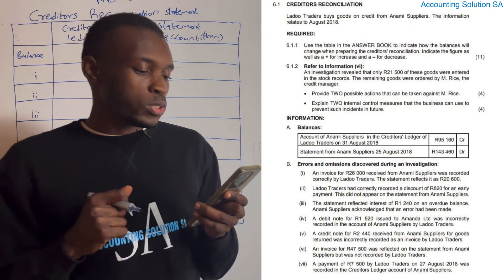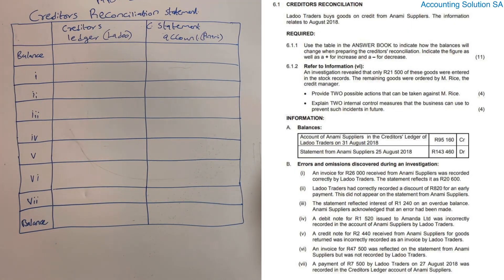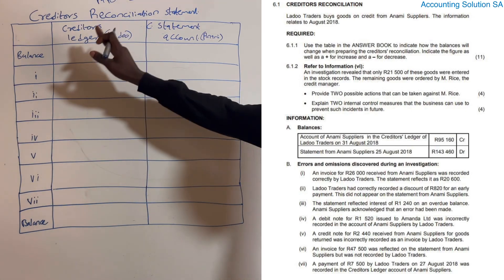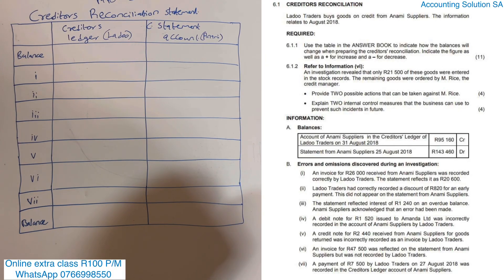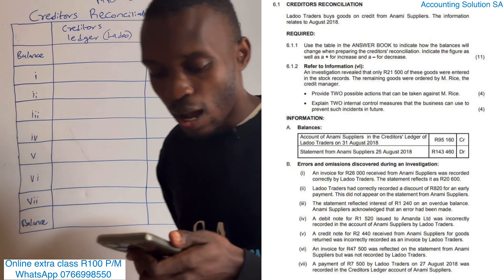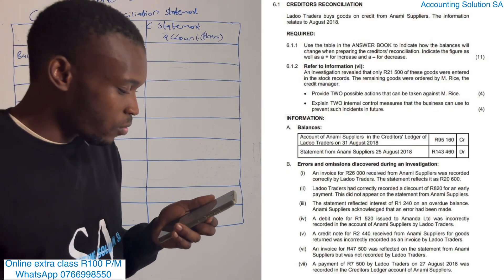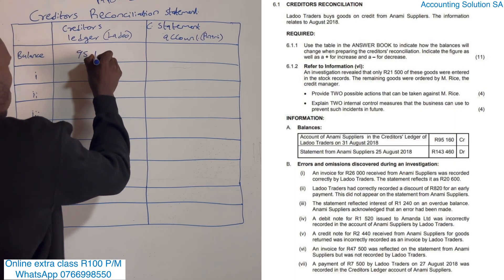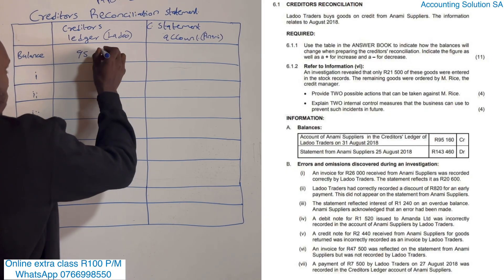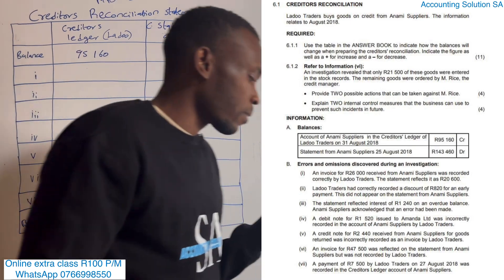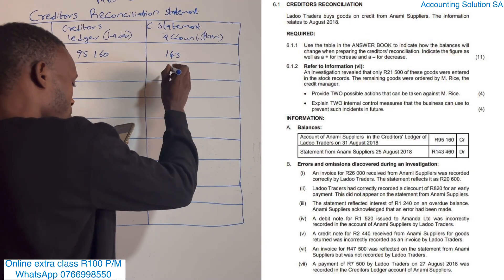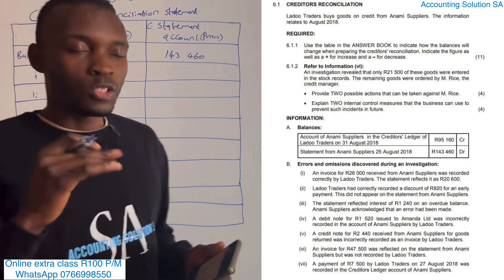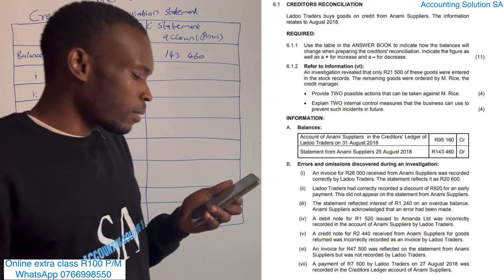Now let's go through the required. Number one: use the table in the answer book. They give us an answer book and say we have to indicate by plus or minus to show whether we are subtracting or adding under the affected book - either our creditors ledger or the supplier's statement. For the balances: the account of Army supplier in the creditors ledger of Ladu Traders shows 95,116 in our books, but on the supplier's statement it was 143,000. They were supposed to be the same amount, which is why we are preparing the reconciliation.